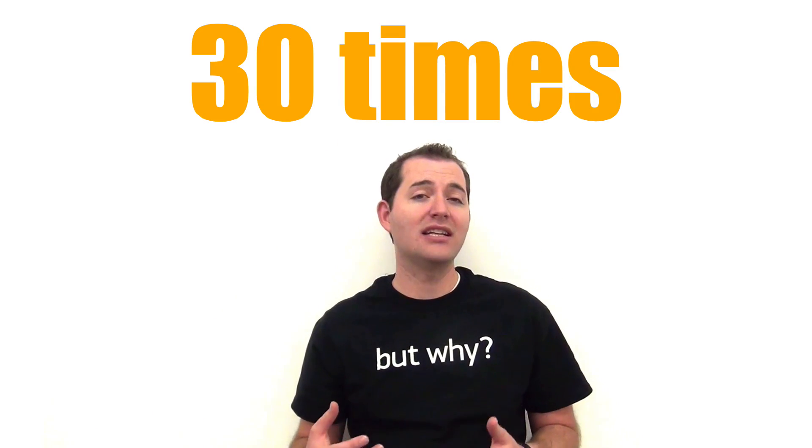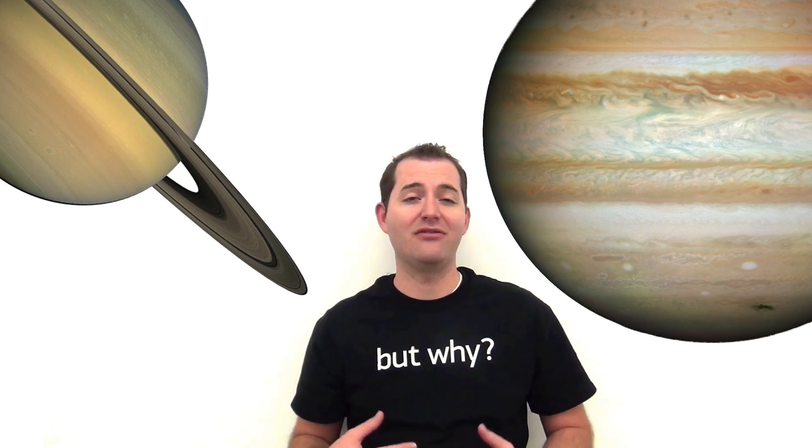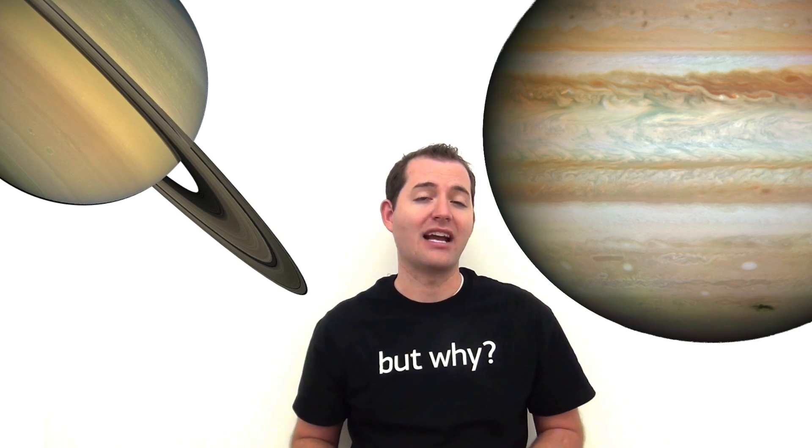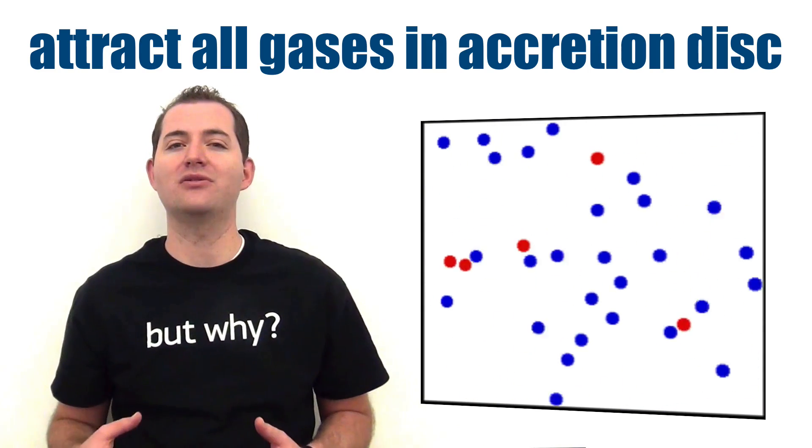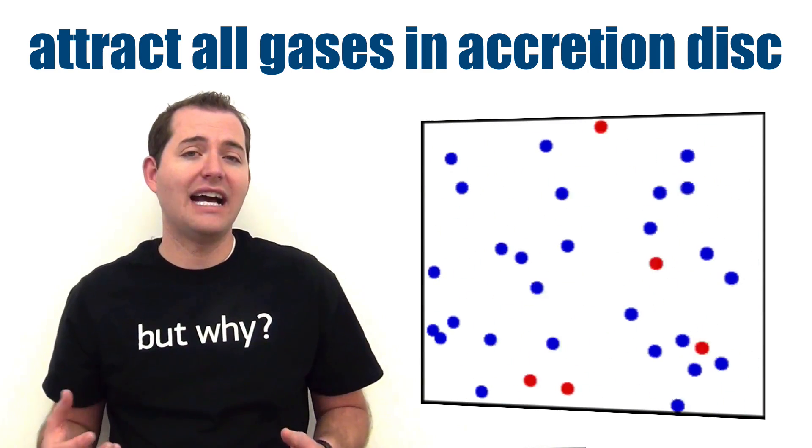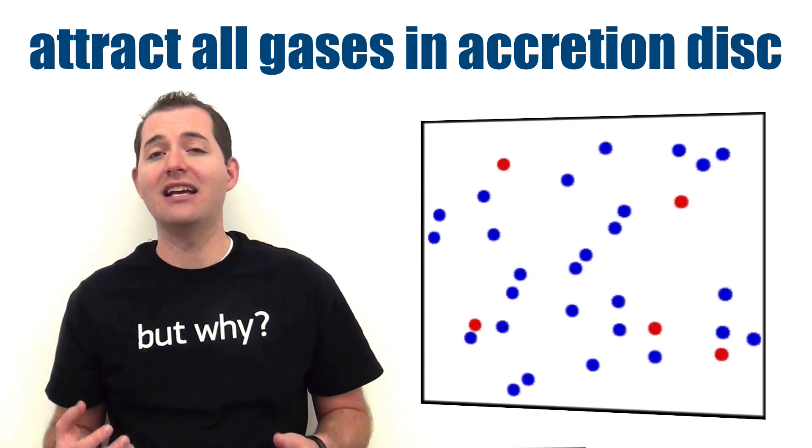The largest gas planets, those with masses about 30 times more than Earth like Jupiter and Saturn, can form very quickly in this process and can very quickly pull all of the gases in the accretion disk around their central mass. These larger gas planets can form in as little as 10,000 years.